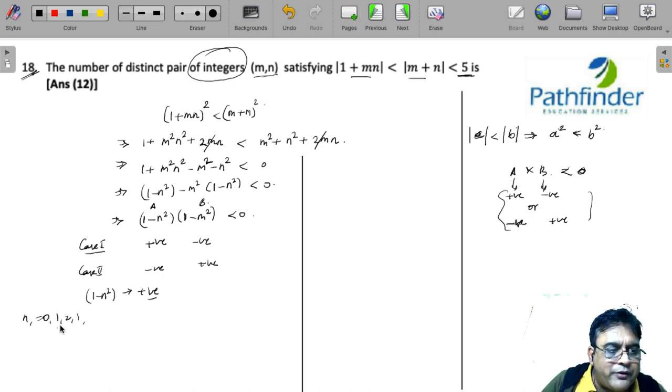But can it really take any values other than 0? For example, if n=1, then 1-n² will not be positive, it will be equal to 0. So I cannot take n=1 or any value greater than 1. The only possibility is n=0.